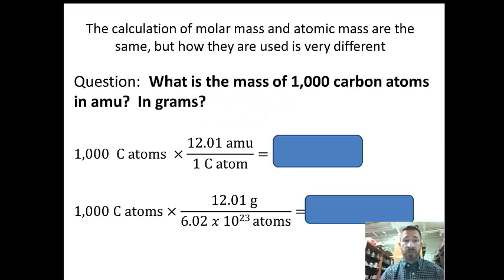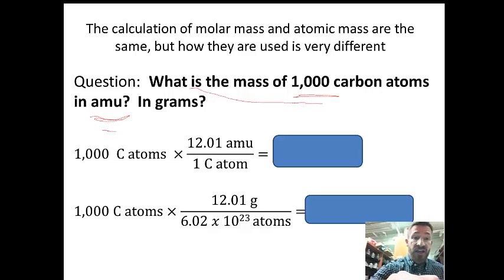Let's do a problem here. The calculation of molar mass and atomic mass are the same, but how they're used is very different. Here's the question: What is the mass of 1,000 carbon atoms in AMUs and in grams?